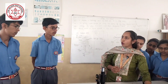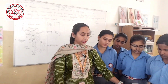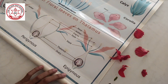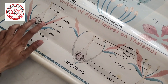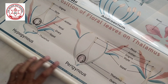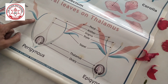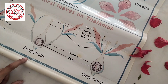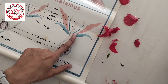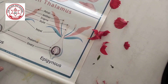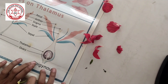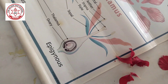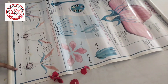Depending upon the position of the ovary, there are three types of flowers: hypogynous, perigynous, and epigynous. When the ovary is superior — meaning other parts are attached below the ovary — it is hypogynous. When the ovary is positioned with other parts around it, it is perigynous. When it is inferior — that is, enclosed — it is epigynous. For example, in guava, the seeds are inside, so that is epigynous.